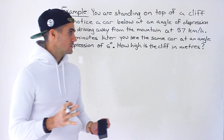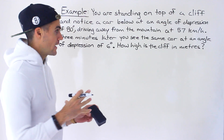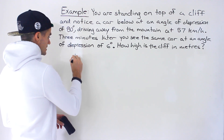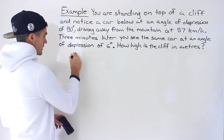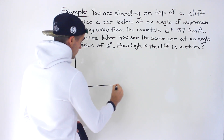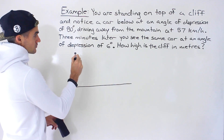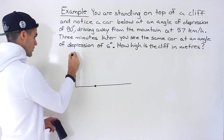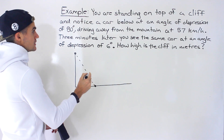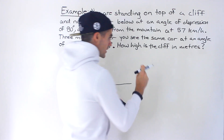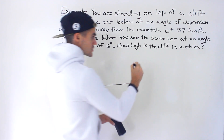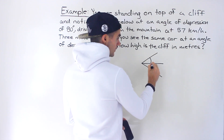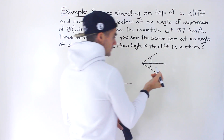This is a pretty cool question with lots of components to put together. As usual, let's try to draw a diagram. So this is the mountain here, and you're standing right there. This is the road, and you notice a car here at an angle of depression of 80 degrees. Remember, an angle of depression and an angle of elevation are always in reference to the horizontal line — a line going up is angle of elevation, a line going down is angle of depression.